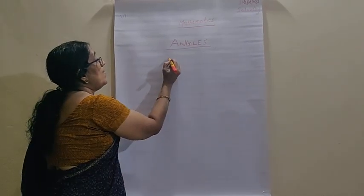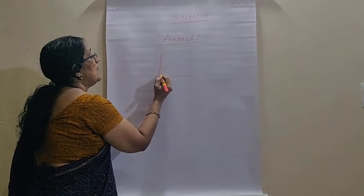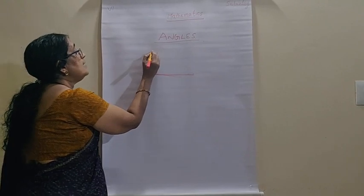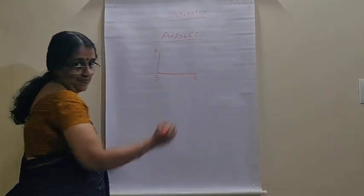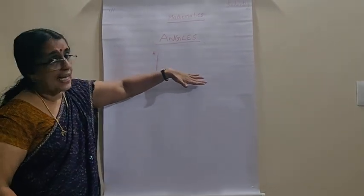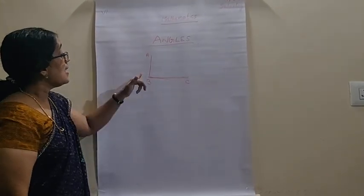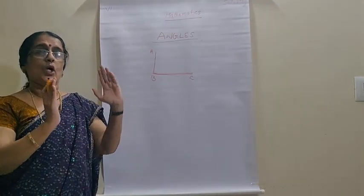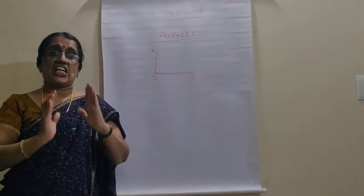First, this one. Angle A, B, C. Right. In this angle, the base line, this is the base line BC. Then BA is just vertical, without any inclination, without nothing. It is just vertical, standing here, right?